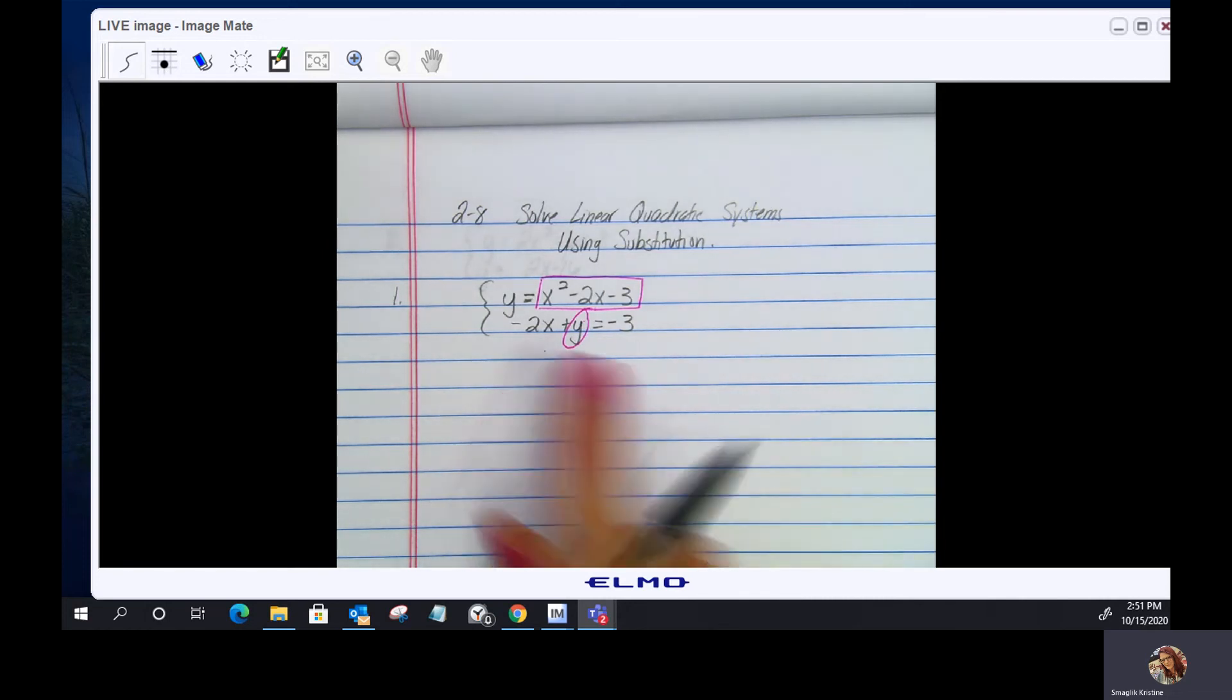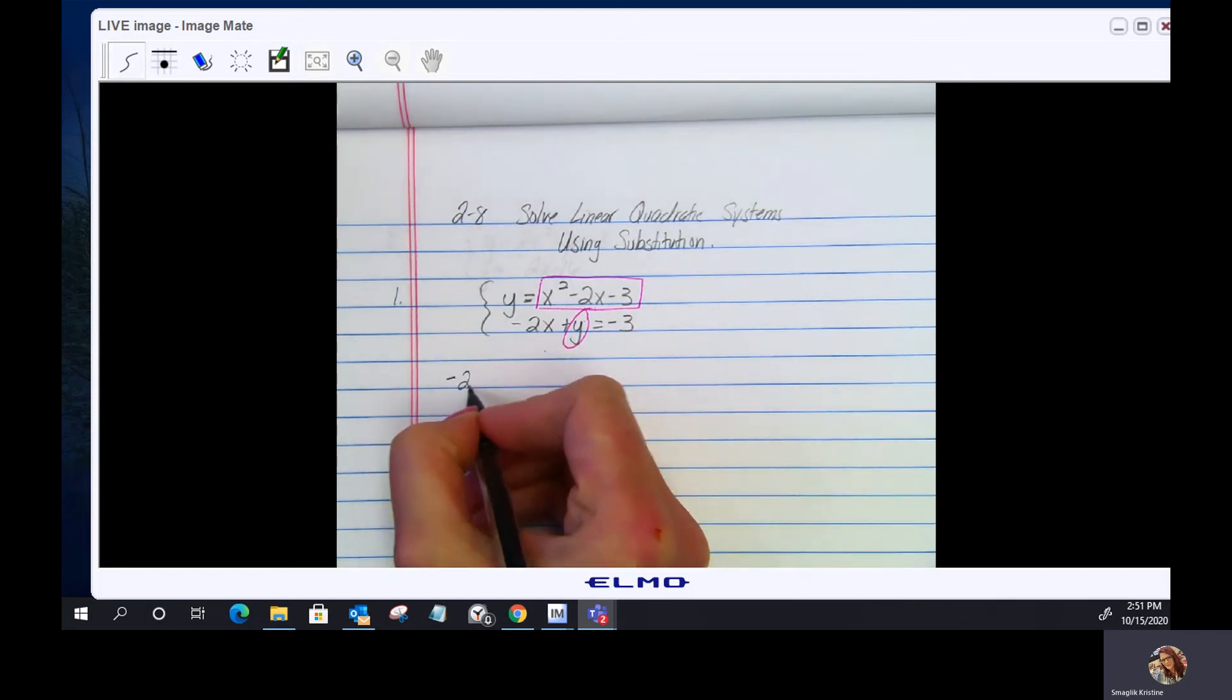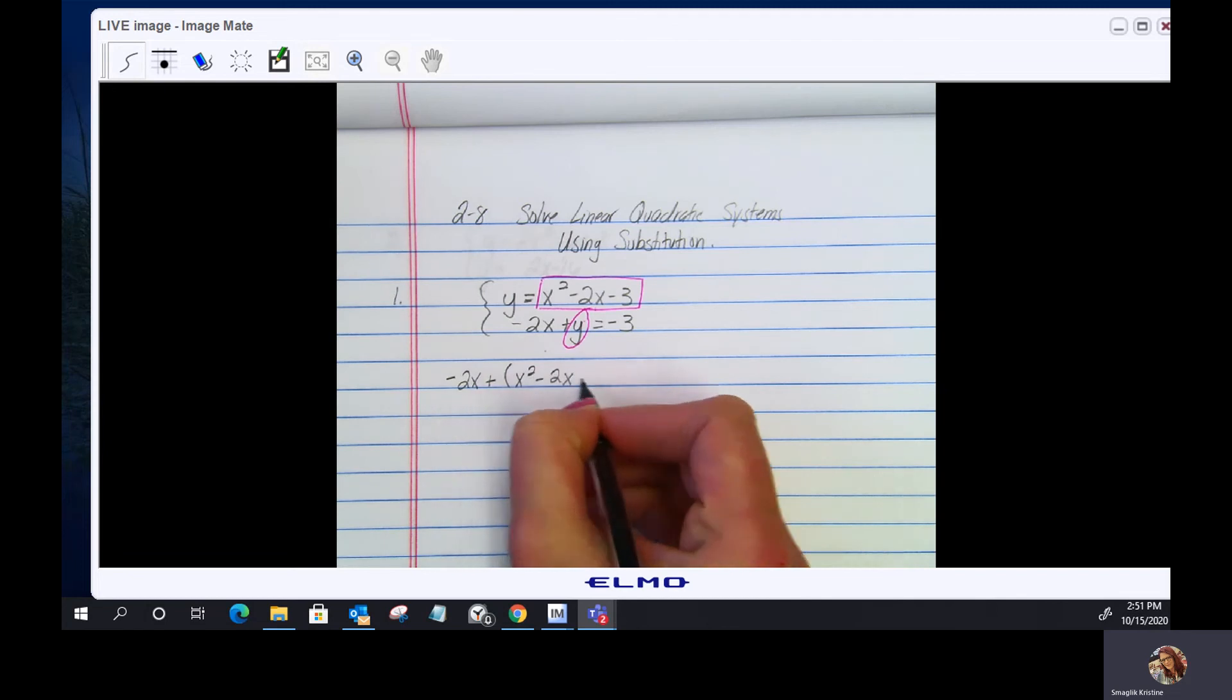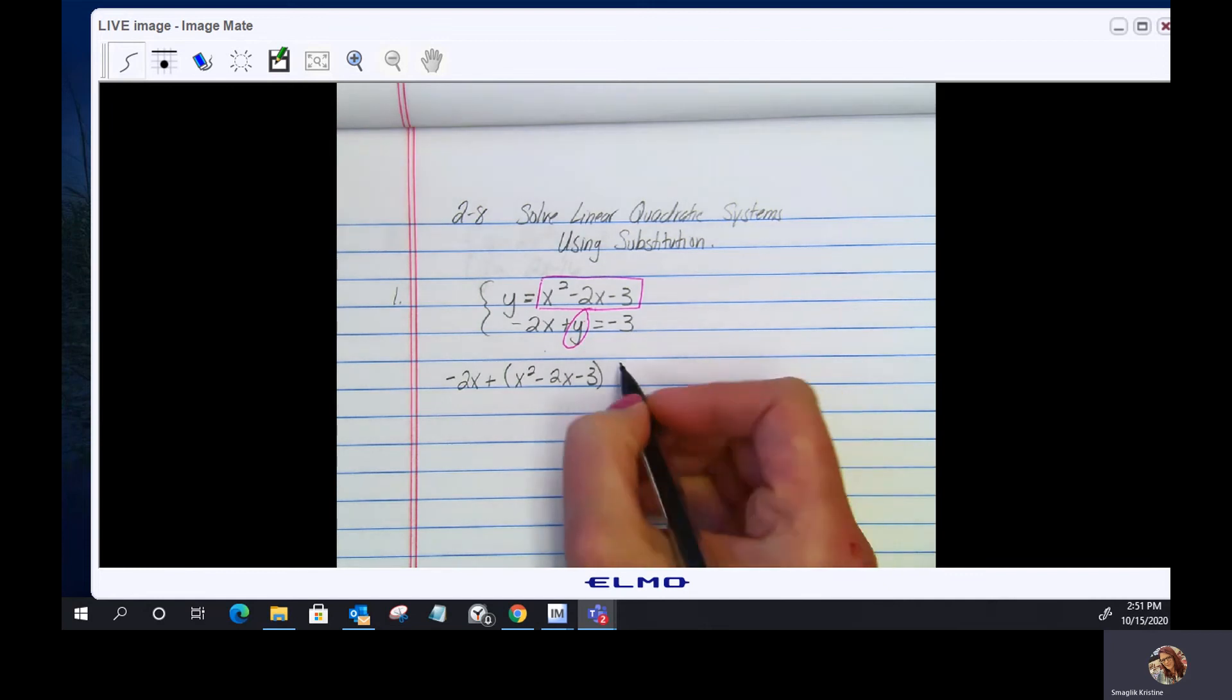So here we go. I'm going to grab my linear equation, I have a negative 2x plus my y value. So I'm just going to insert my y value, which is x squared minus 2x minus 3 equals negative 3.